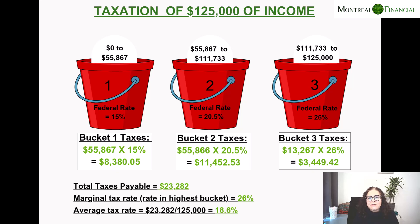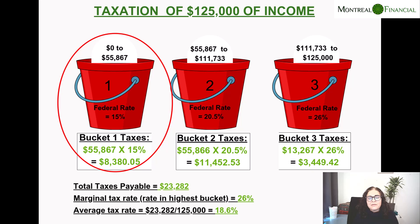Every level of income goes into a bucket, and then there is a tax rate that is applied to that bucket. In our first bucket, we have income earned from $0 to $55,867, and the tax rate is 15%. So that first $55,000 is taxed at 15% and you pay $8,380 in tax. Regardless of whether you earned only $55,000 or $500,000, you will also pay $8,380 on the first $55,867.